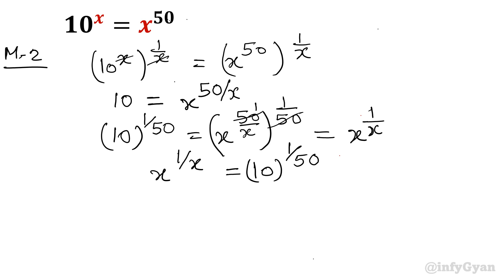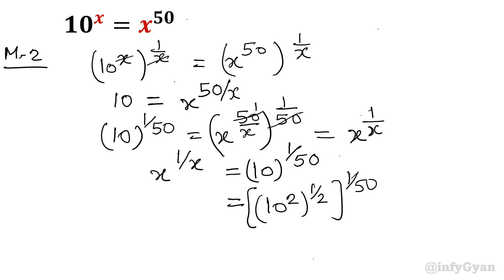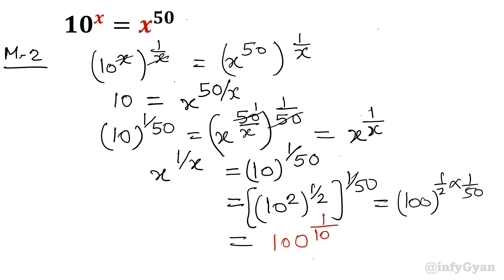So we again have 10 raised to the power 1 over 50. Same as before: 10 raised to the power 2, whole power half, whole power 1 over 50. So 10 raised to the power 2 is 100, raised to the power half times 1 over 50. Our net result is 100 power 1 over 100, which equals x power 1 over x. So by this method also, we get the same result.